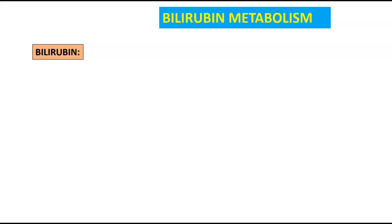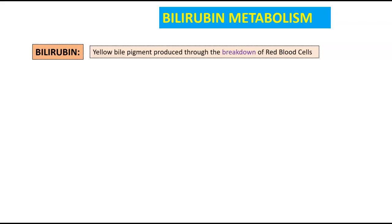Today we are talking about bilirubin metabolism, but before we get into that I want to break down a couple of key words. The first one is bilirubin — what exactly is this? Bilirubin is a yellow bile pigment produced through the breakdown of red blood cells. As the accumulation of bilirubin builds up in the bloodstream, it can lead to a condition called jaundice.